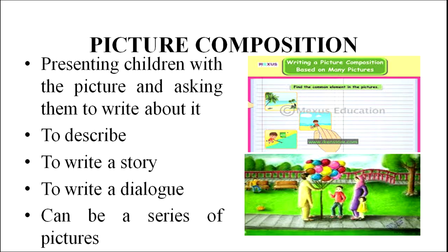The first method is picture composition. A teacher presents a picture to the students and they are asked to write about that picture — they can either describe the picture, write a story about it, or give a dialogue writing from that picture. It can also be a series of pictures, where one picture is related to the next. From these three or four pictures, a student is asked to develop a story or describe all the pictures in a given sequence.